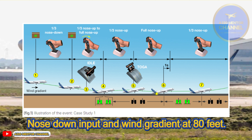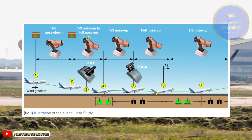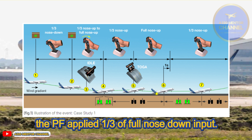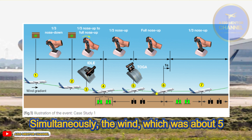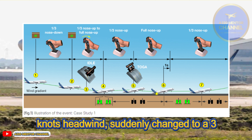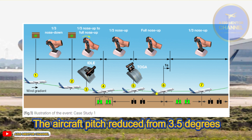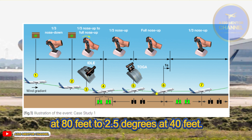At 80 feet RA, the PF applied one third of full nose-down input. Simultaneously, the wind, which was about 5 knots headwind, suddenly changed to a 3-knot tailwind. The aircraft pitch reduced from plus 3.5 degrees at 80 feet to plus 2.5 degrees at 40 feet.